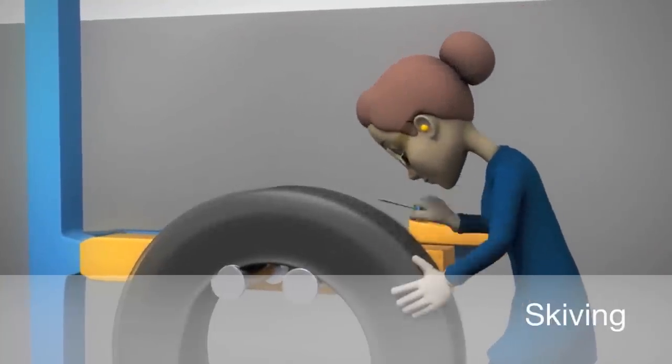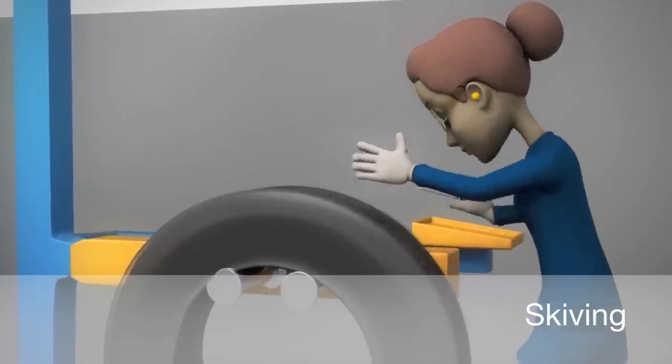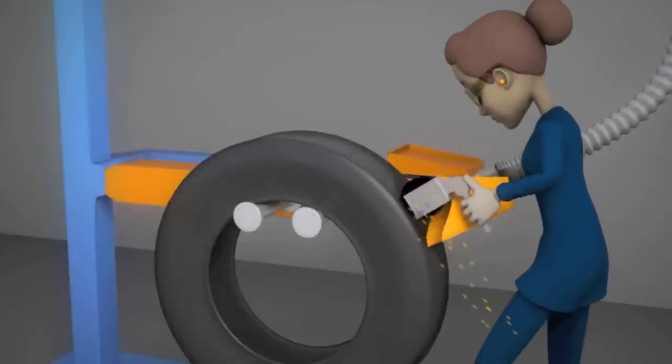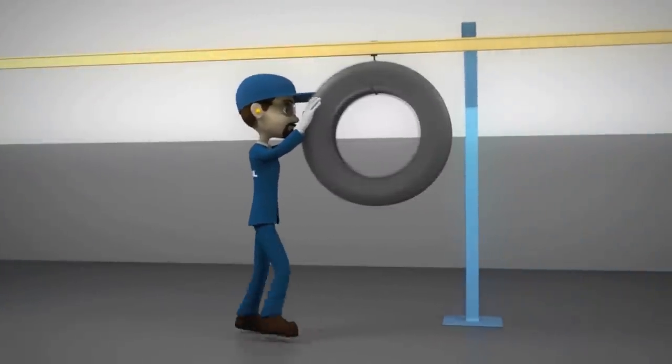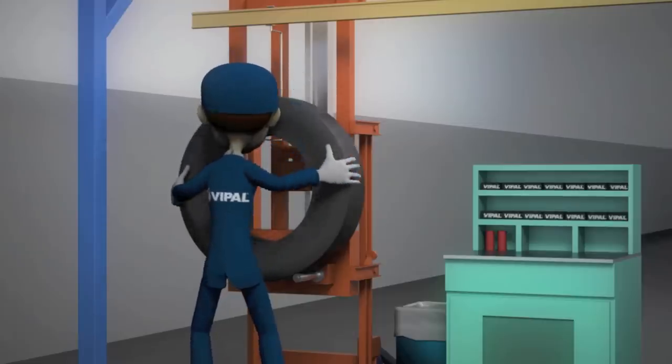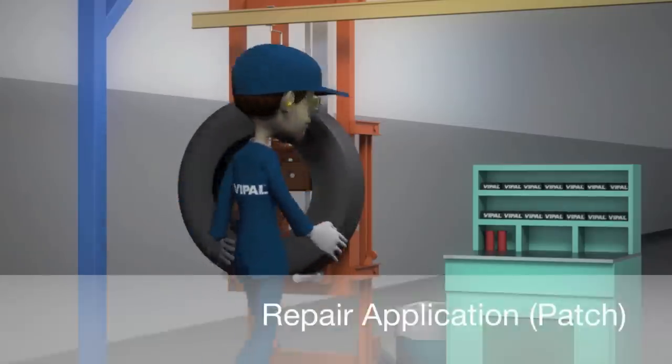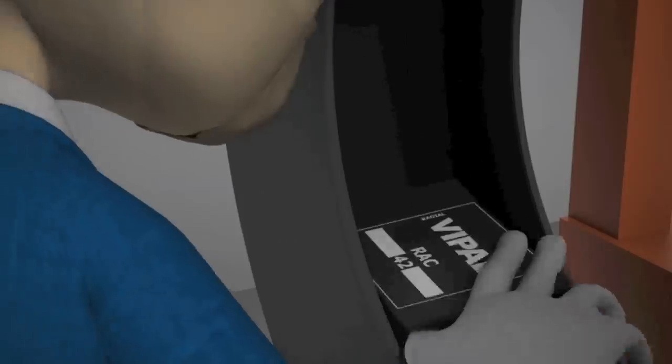In this stage, the damaged spots are cleaned and prepared for the application of repair materials. To restore the original strength to the tyre casing, repairs are applied on the damaged areas.